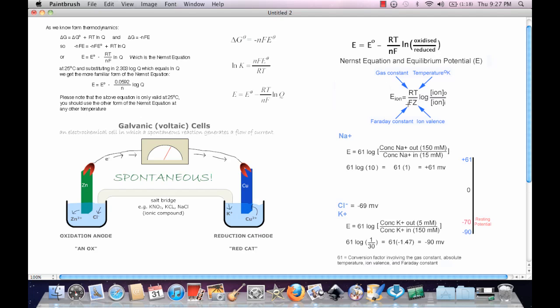What you should know about this is that R is the gas constant, T is the temperature, F is the Faraday's constant, and Z is the ion valence.